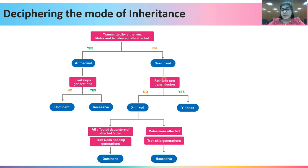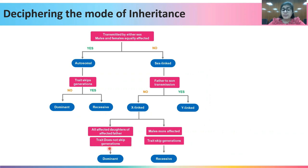In the case of sex-linked inheritance, if you observe father-to-son transmission, then there are high chances that the trait is Y-linked. Y-linked traits are controlled by the Y chromosome and are always transmitted from father to sons. In the case of X-linked traits, if all affected daughters have an affected father and the trait does not skip generations, then it is X-linked dominant. If males are more affected and the trait skips generations, then it is most likely X-linked recessive.